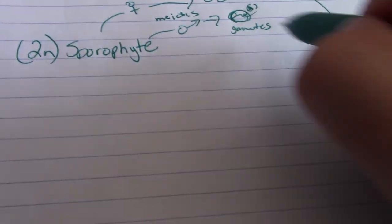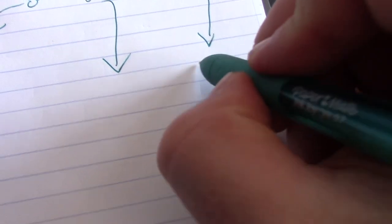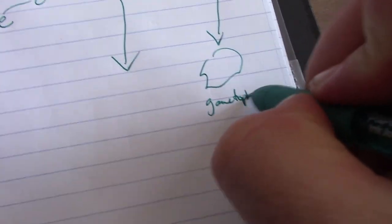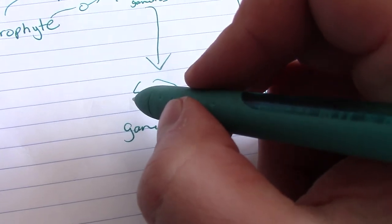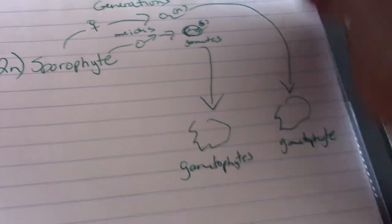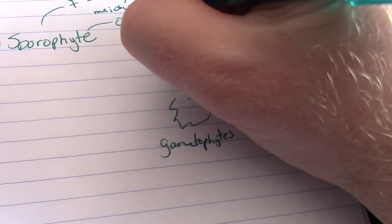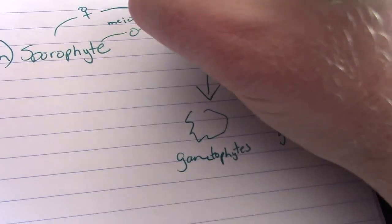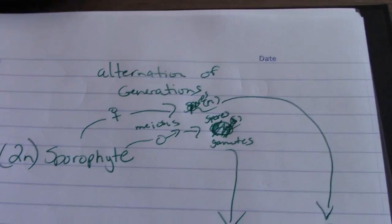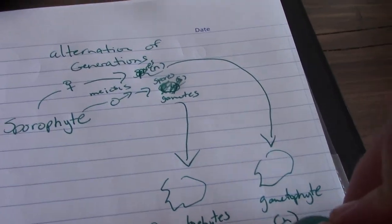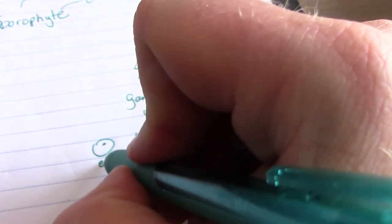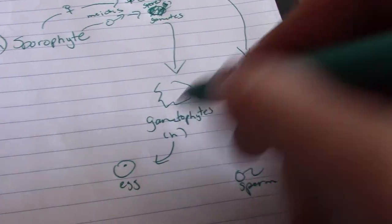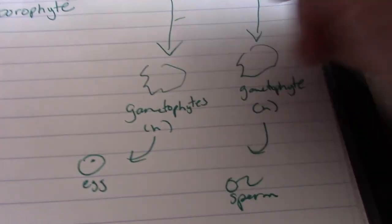Rather than them fertilizing right away, what happens is these produce gametophytes. So you'll have the gametes turn into their own organism for a period of time. I should reword this. Sporophytes produce spores. And they're haploid. So these spores are produced by meiosis from the sporophyte. And this produces the gametophytes. And these are also haploid. But they're tissue. They're their own organism. And then the gametophytes produce gametes.